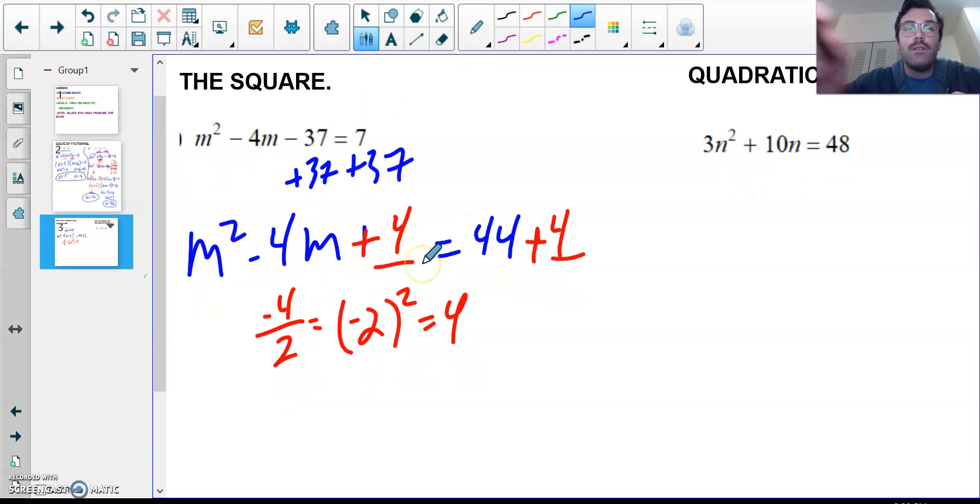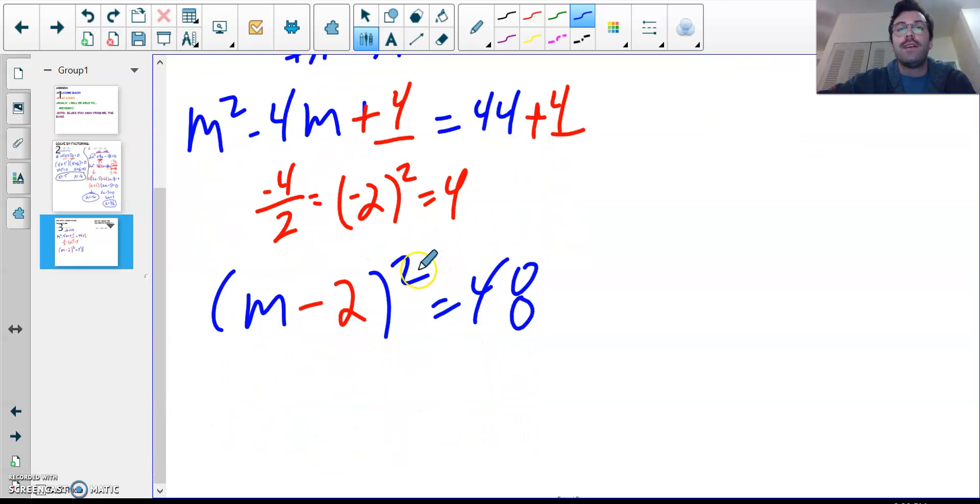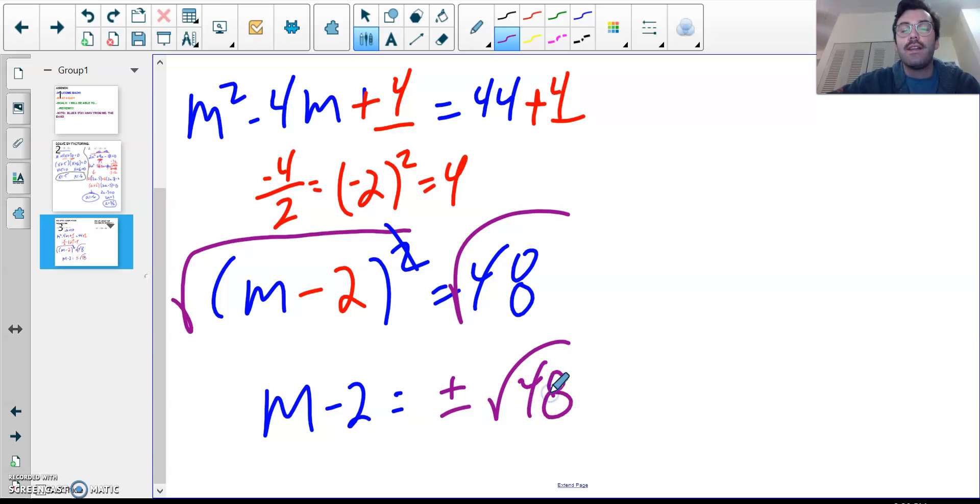From there, I want to complete my square. I want to factor this down. So, this becomes m minus 2. Remember, it's minus 2. Minus 2 squared equals 48. Remember why this is negative 2? Well, because this right here is negative 2. They go hand in hand. Now, this is where we kind of stopped when we were doing vertex form. Remember, to solve now, we're wanting to solve.